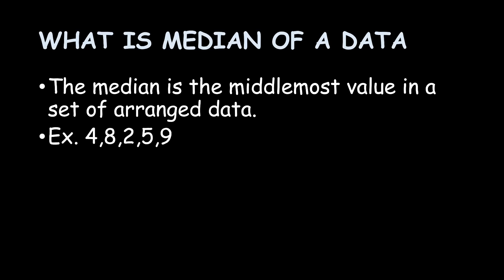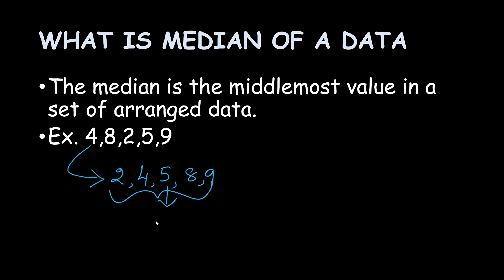For example, here 4, 8, 2, 5, 9 — this is one data with 5 number of observations. To find the median, the first step is to arrange the data in ascending or descending order: 2, 4, 5, 8, and 9. So what is the middle value? The middle value is 5, that means 5 is the median of this data.